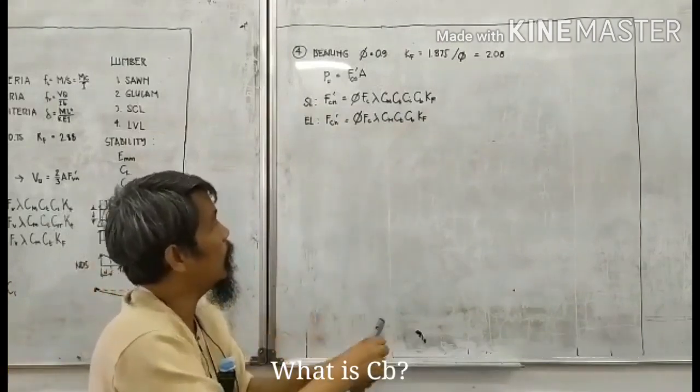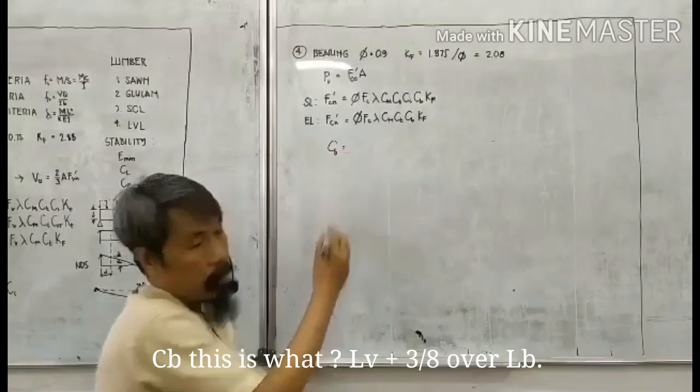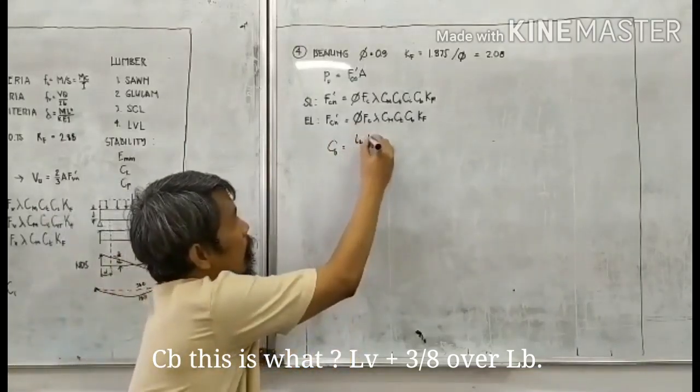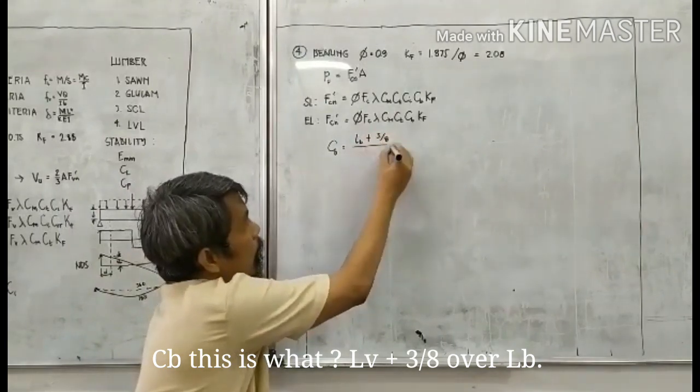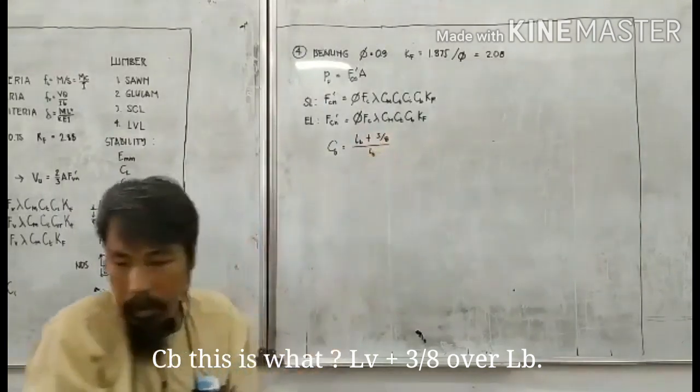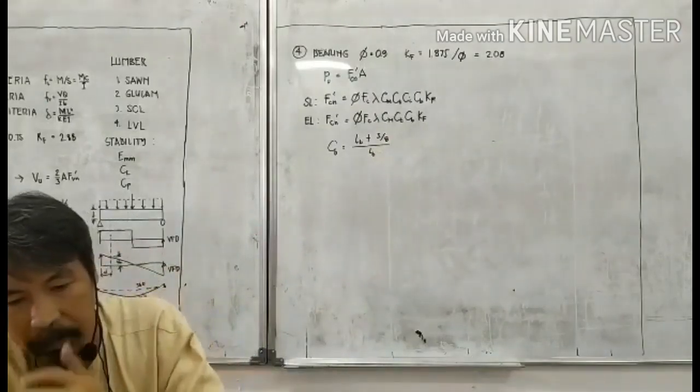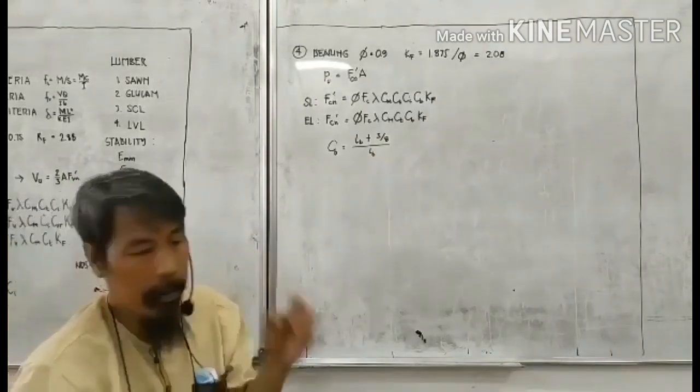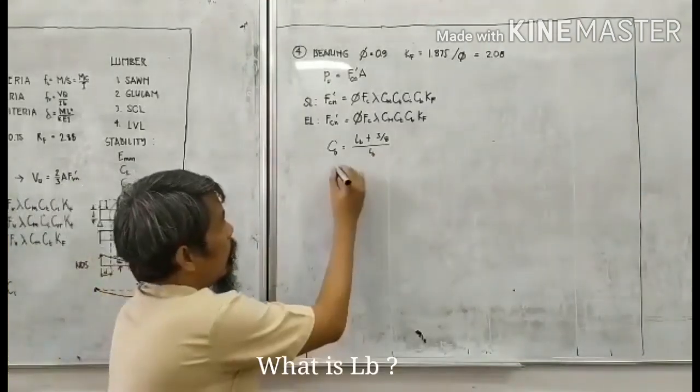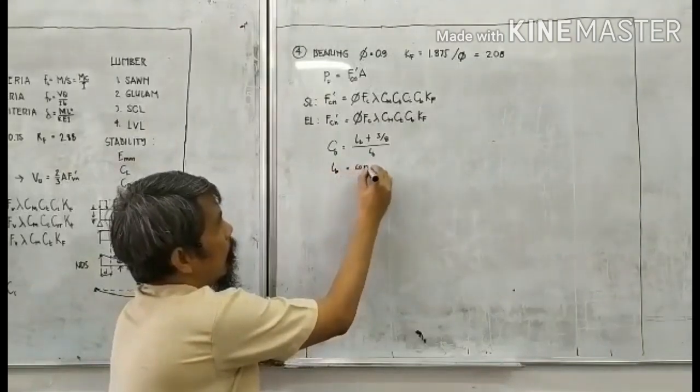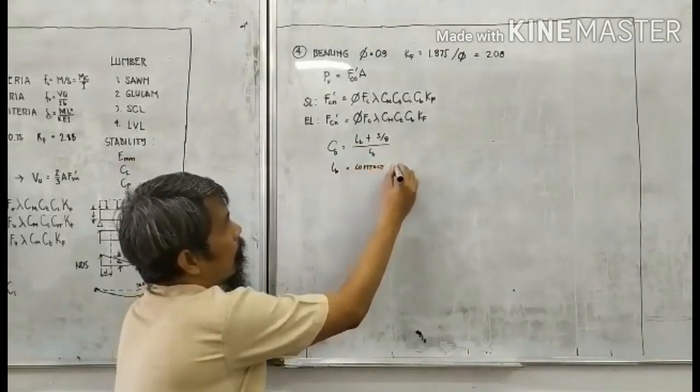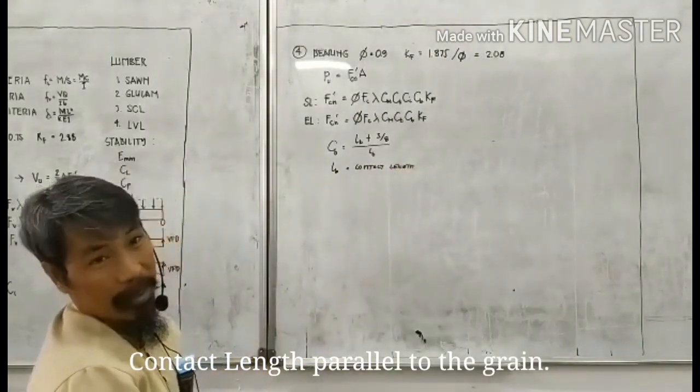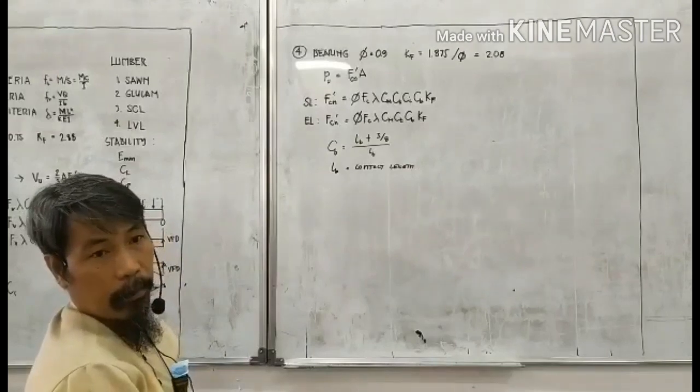What is that CB? This is what: LB plus 3E over LB. Okay, what is LB? 3E over? Contact length, parallel to the grain. Parallel to the grain.